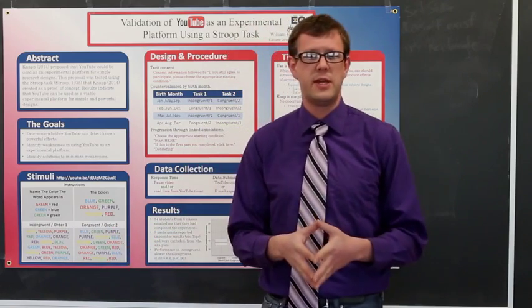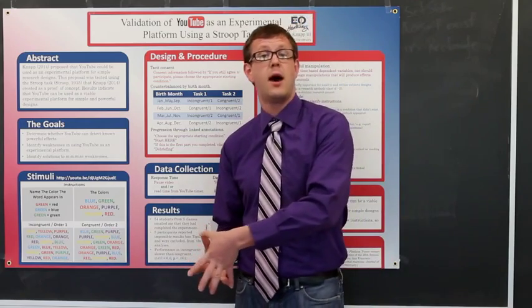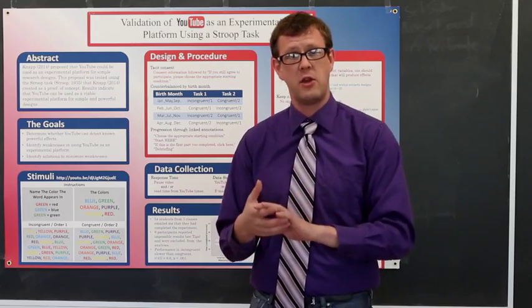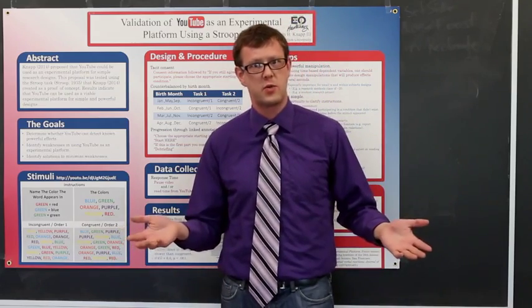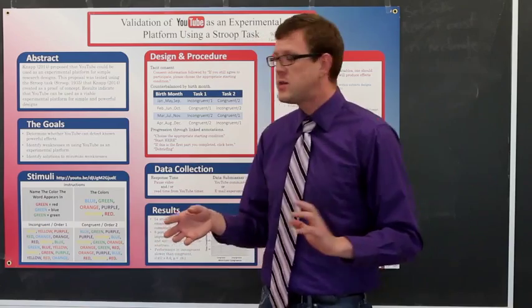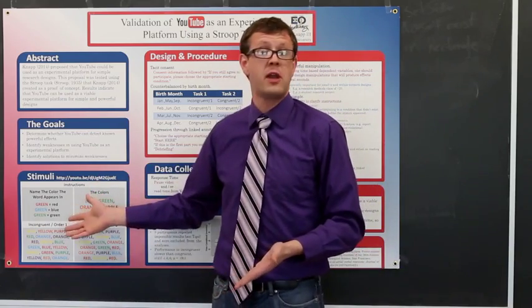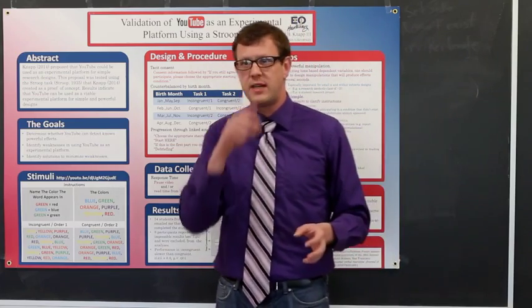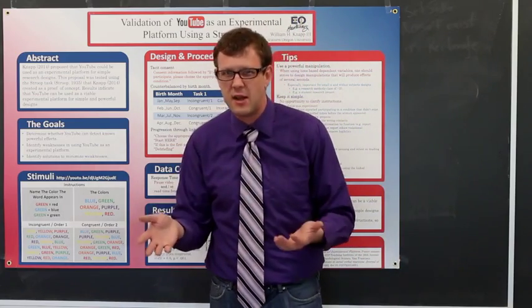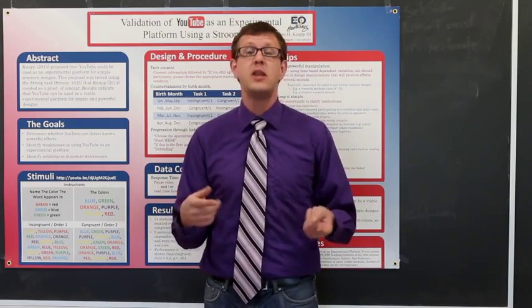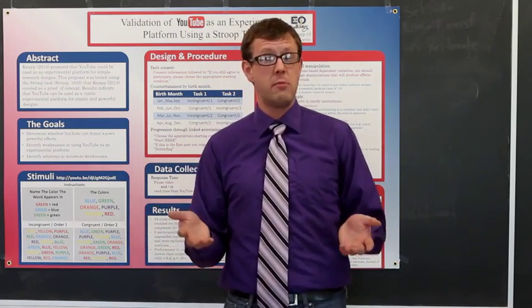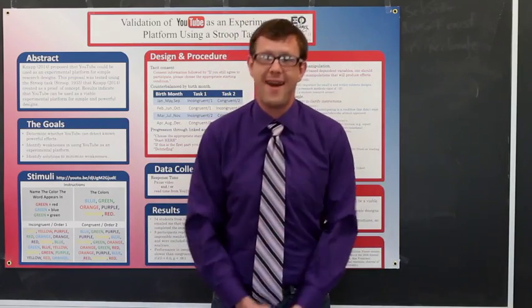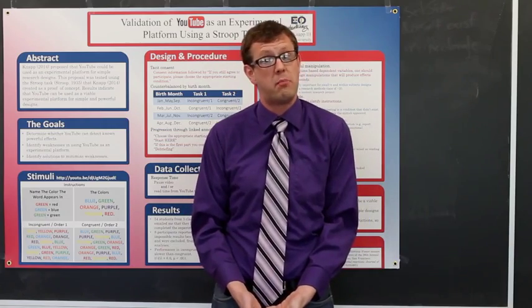So in the classic Stroop condition, you have congruent conditions where the words and the colors match one another, and you also have incongruent conditions where the words don't match with the color. So I had the two primary conditions of interest, congruent and incongruent, and to make sure that there wasn't a difference between the words on the list and also not use the same words both times, I had two word lists. So I counterbalanced word lists with congruence, and I had participants assign themselves to the appropriate word list based on their month of birth.